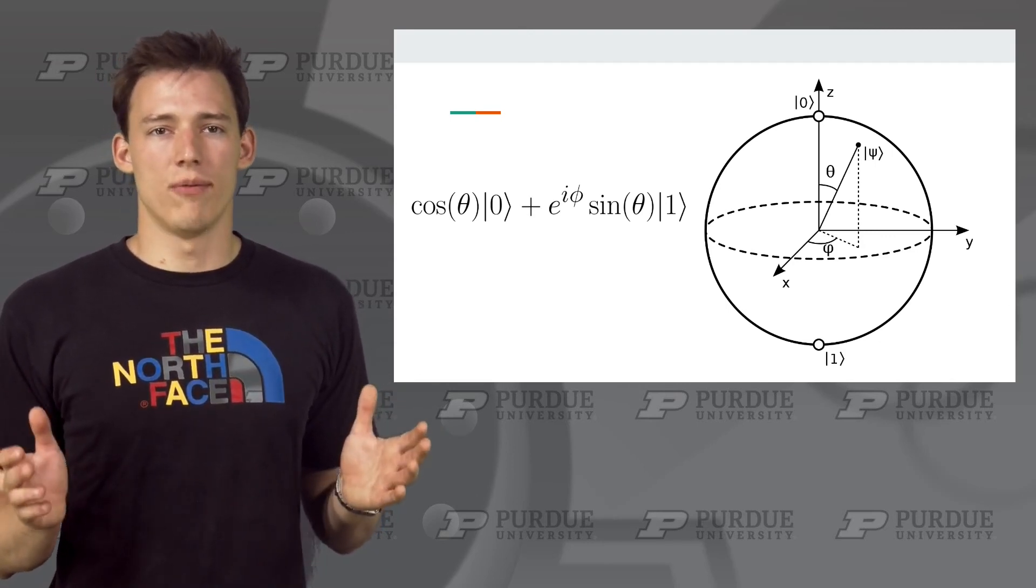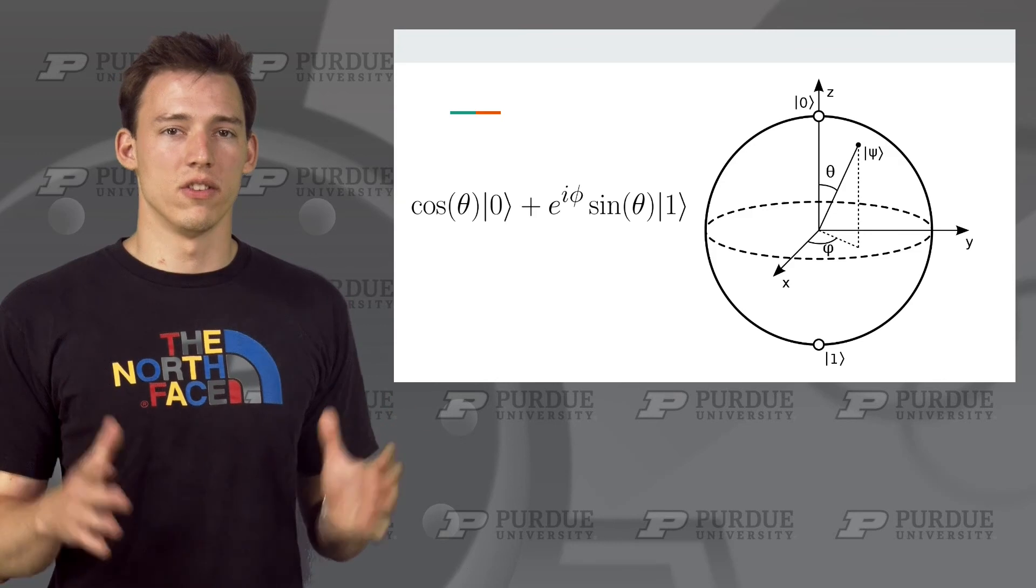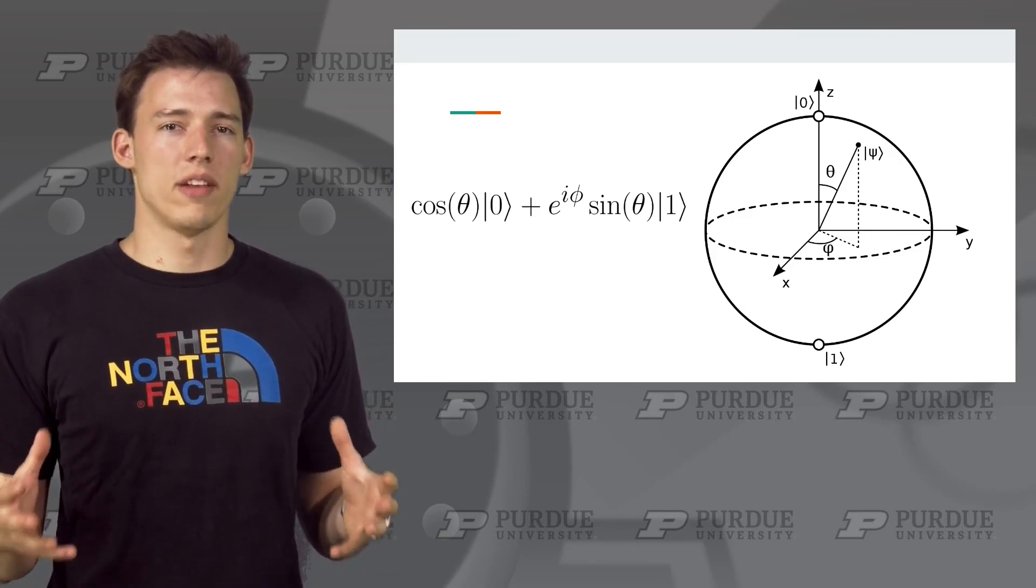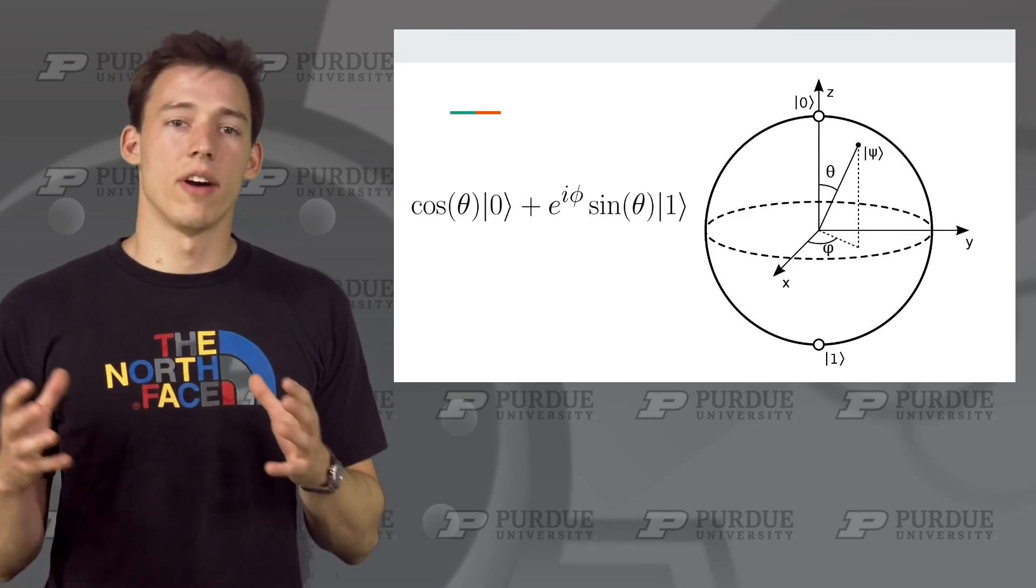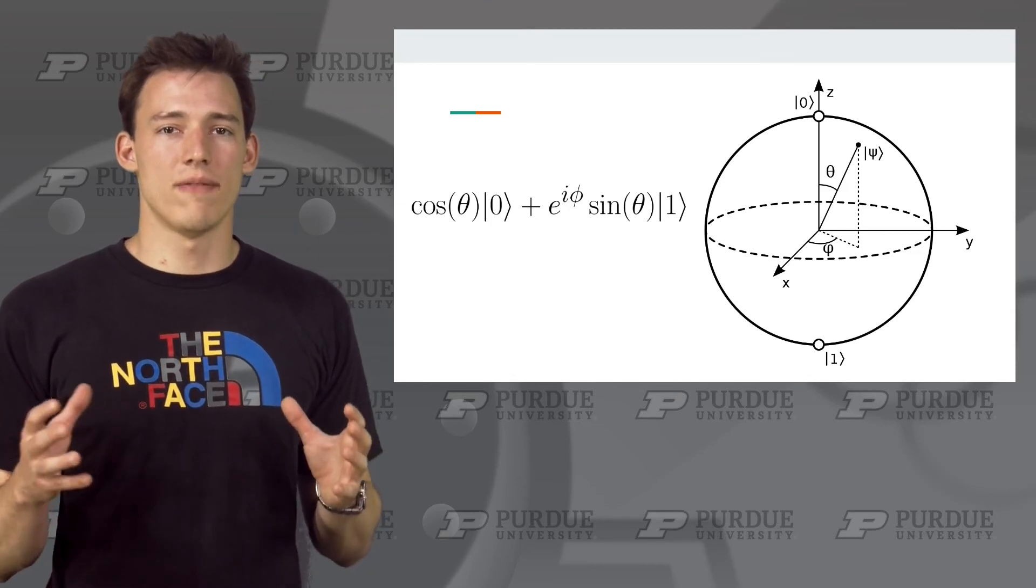Going forward, it can be really helpful to try to visualize states as points on this sphere. When we get into quantum gates, the Bloch sphere provides a good way of understanding how gates can modify states by rotating their state vectors.